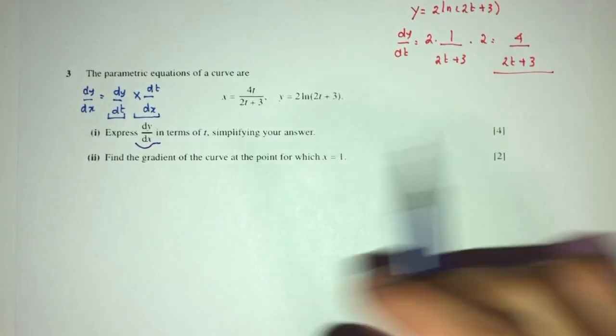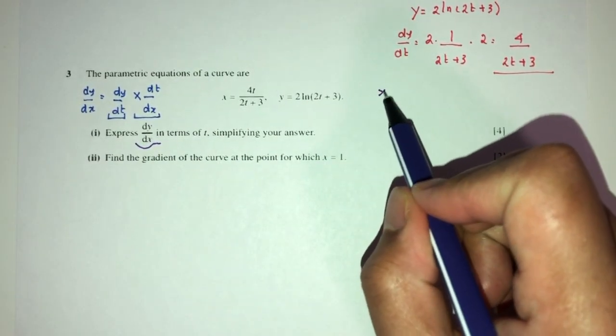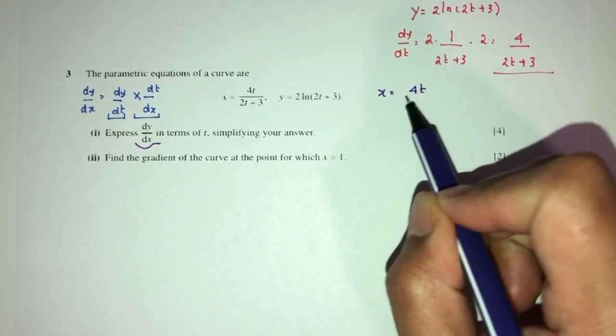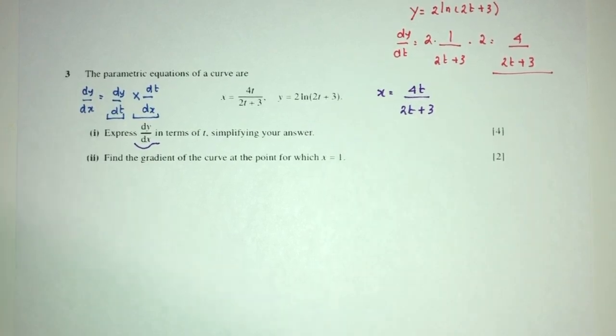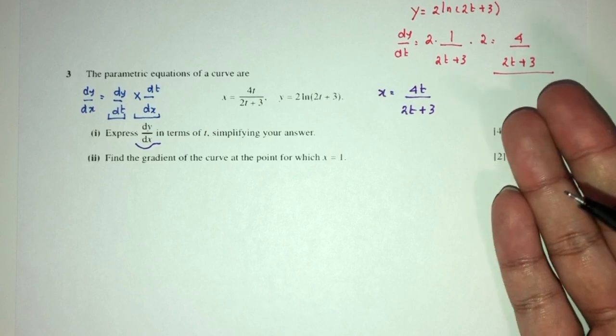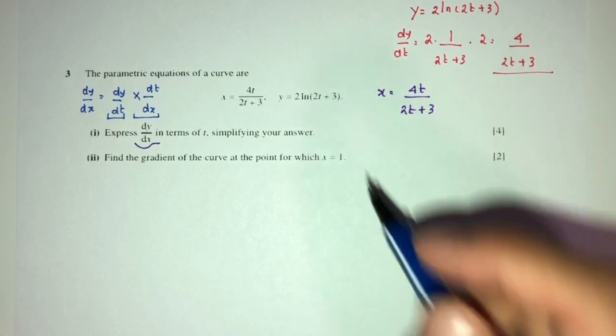The next one for x, here we have x is equal to 4t over the value of (2t + 3). Now, this is a fraction, as you can see, we have to use the quotient rule.